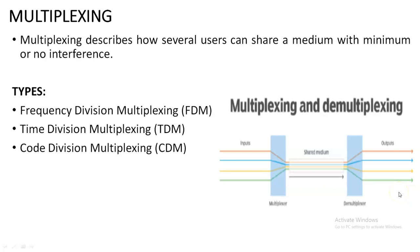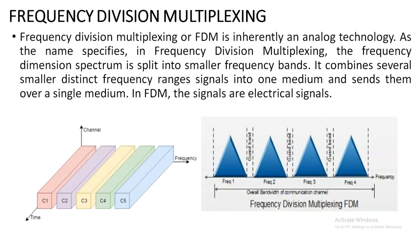Under multiplexing we have three types: frequency division multiplexing, time division multiplexing, and code division multiplexing. In frequency division multiplexing, multiple frequencies are combined together to travel in a common medium.